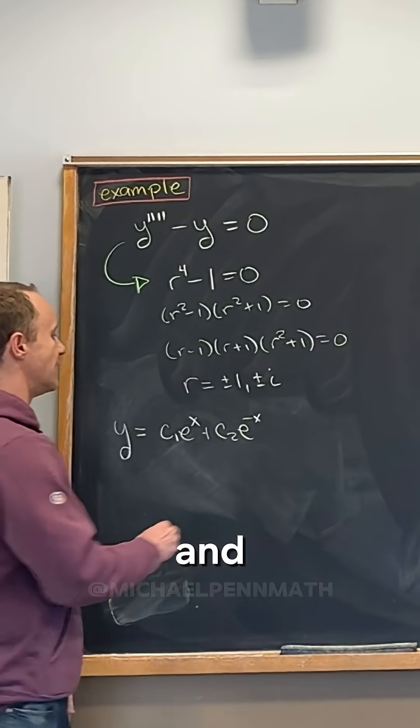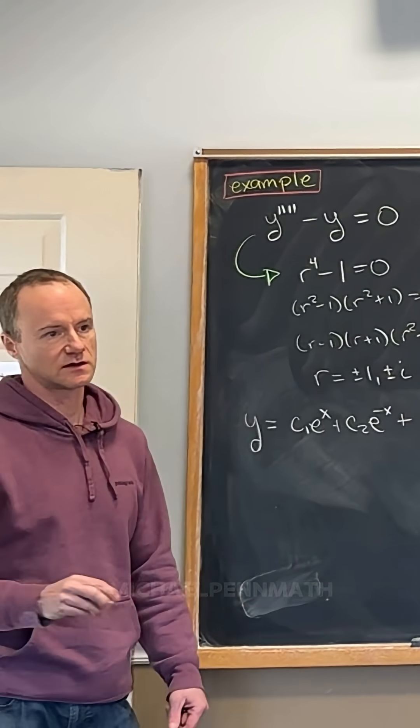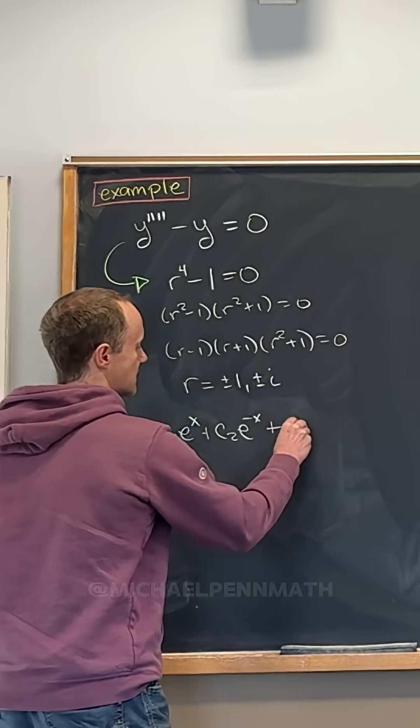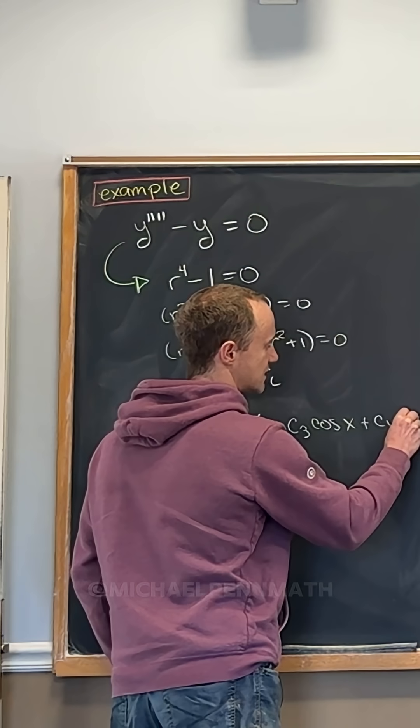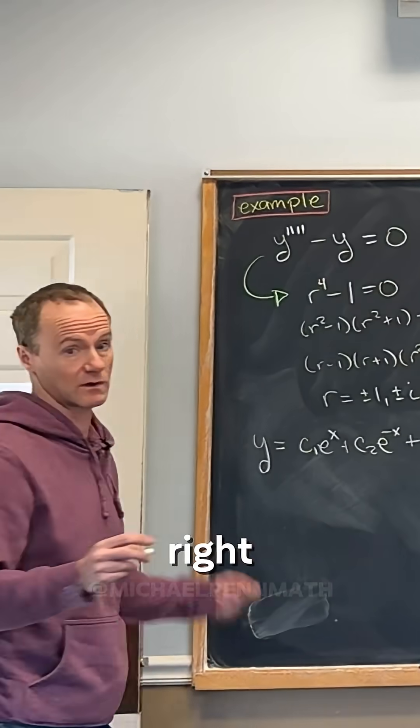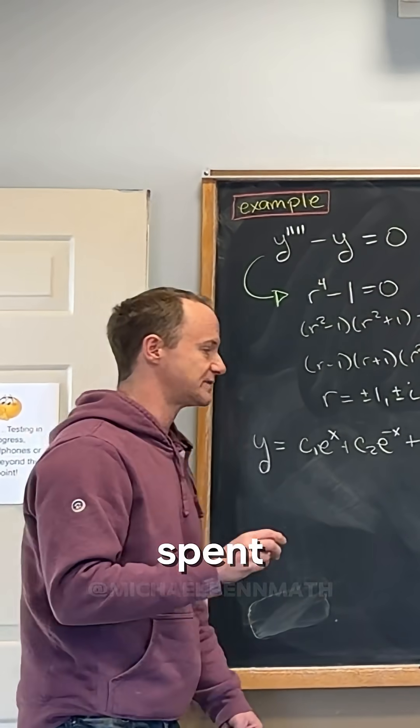Right, we don't have to do that. And then what do the plus minus i roots give us? Yeah, so c3 cos x plus c4 sin x. That's it, right? And now this is why we spent so much